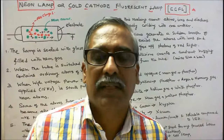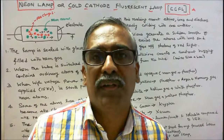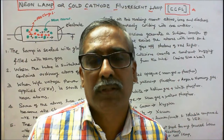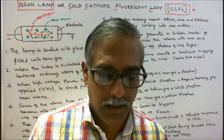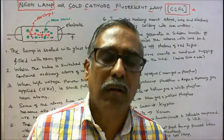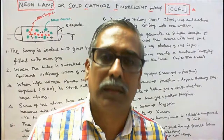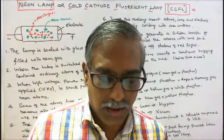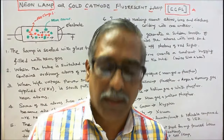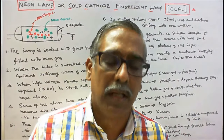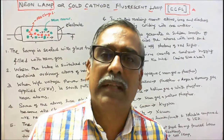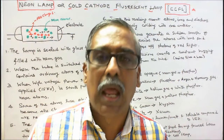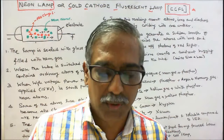In this class we discuss about the operation of Neon lamp or Cold Cathode Fluorescent lamp, CCFL. The name Neon is derived from a Greek word 'Neos' meaning new. Neon was discovered in 1898 by British chemists Sir William Ramsey and Moorish W. Travers.